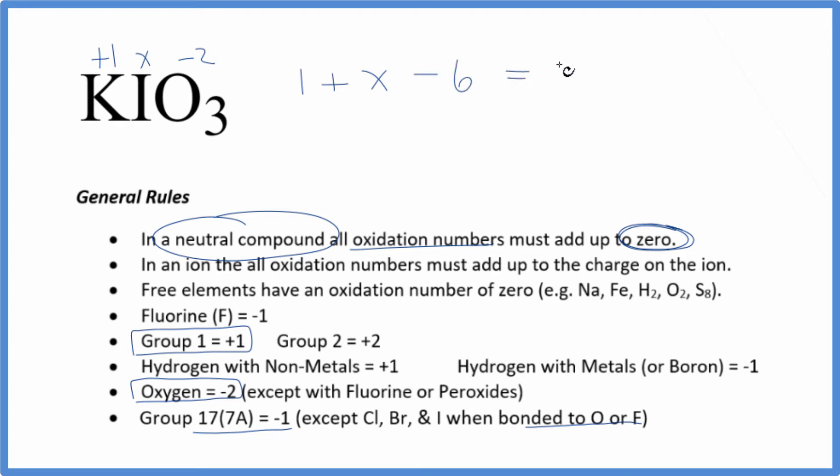So solve for X. X minus five equals zero. Add five to both sides and we end up with X is positive five. So the oxidation number on this iodine here is plus five.